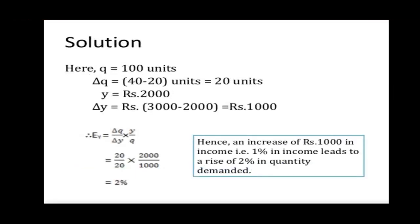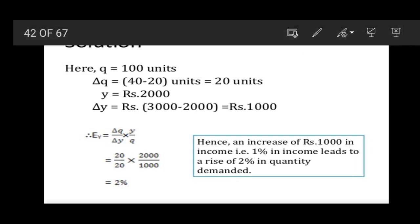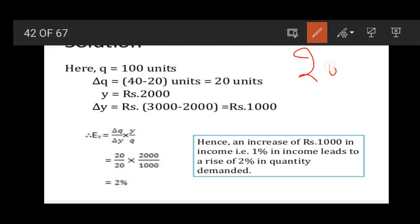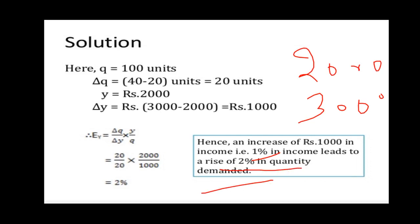So this is the solution in which we have seen a 2% change in demand. Income increased from 2,000 to 3,000 — that is a 50% increase in income — while demand increased from 20 to 40 units, which is a 100% increase in demand, giving EY = 2. This is all about income elasticity of demand. I hope you all understand what income elasticity of demand is. In our next lecture, we will discuss what are the degrees of income elasticity of demand. Thank you so much.